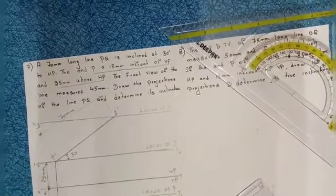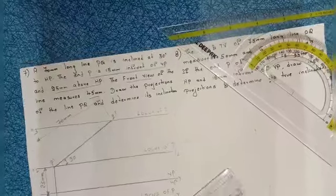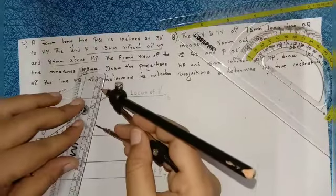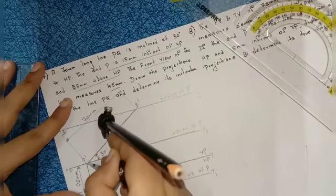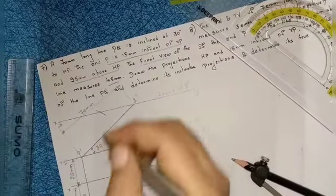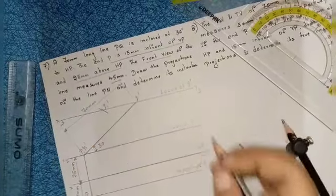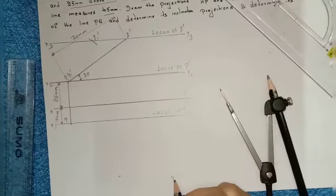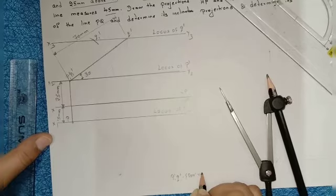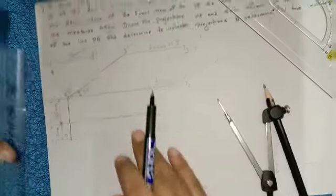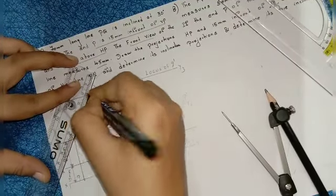In this question the front view is also mentioned — 45mm. Take 45mm distance with your compass, keep your compass on P dash and draw the arc. Name this point as Q1 dash. P1 dash Q1 dash is your front view. Join this — the front view should be in dark manner.